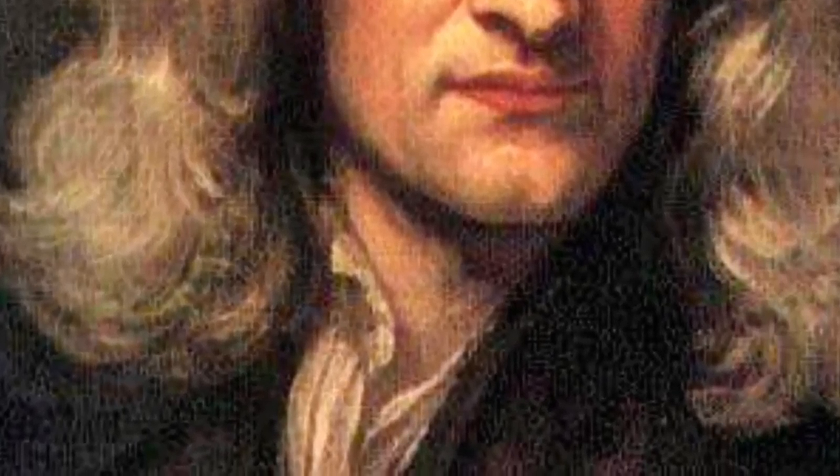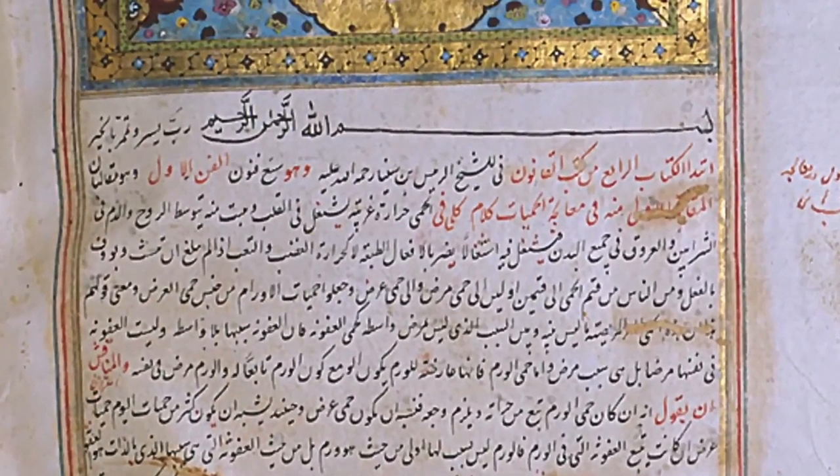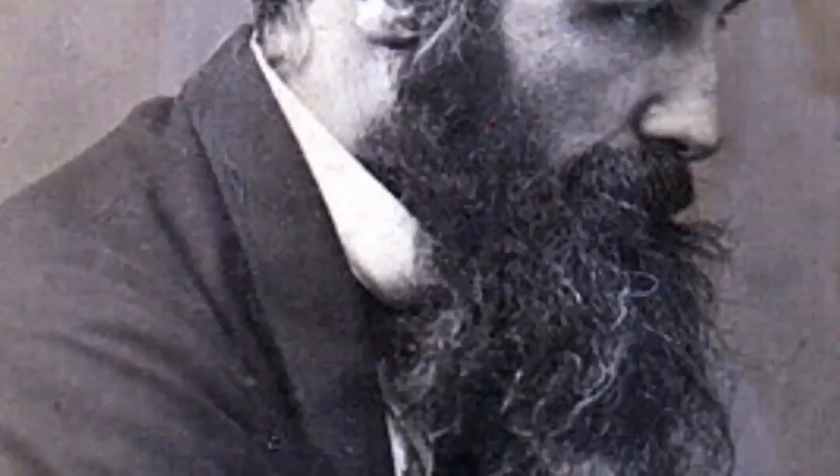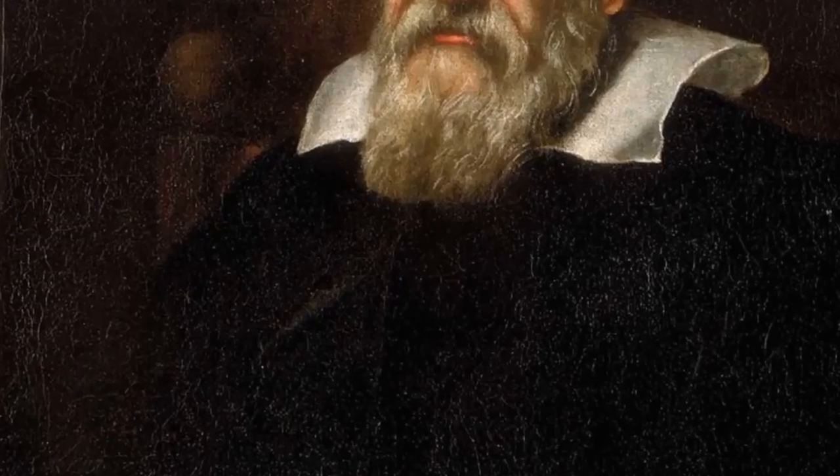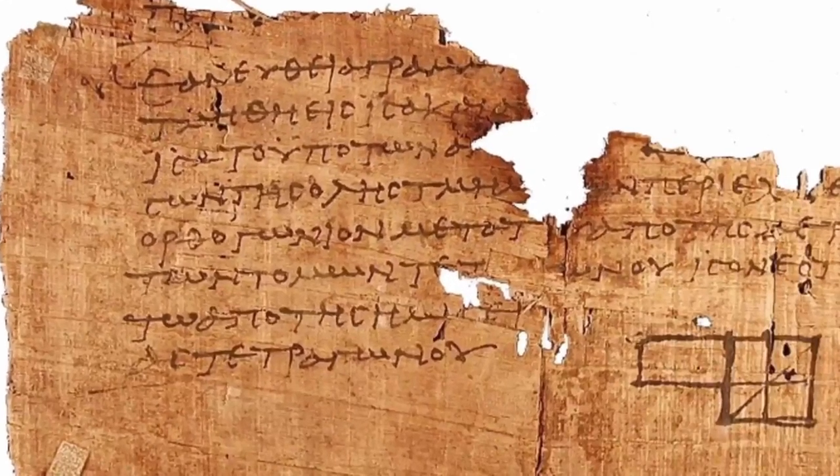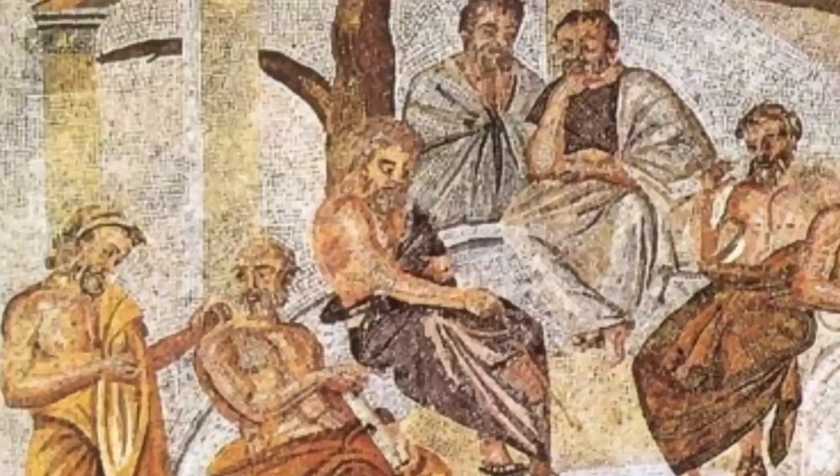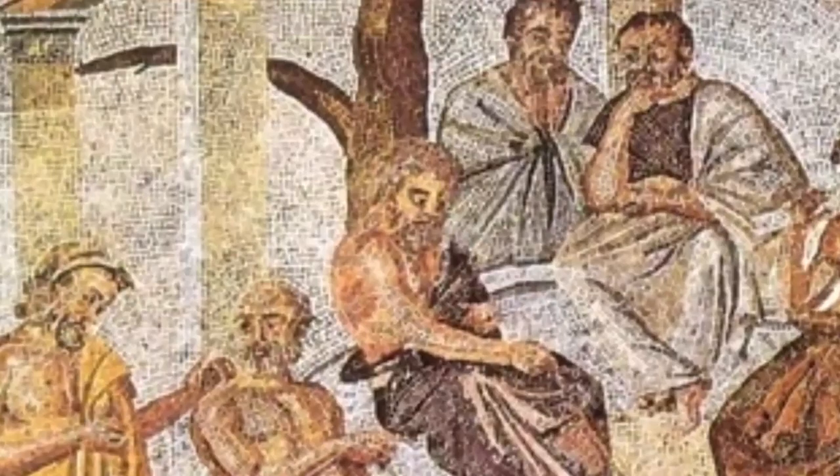Western Europe's knowledge was concentrated in monasteries until the development of medieval universities in the 12th century. The curriculum of monastic schools included the study of the few available ancient texts and of new works on practical subjects like medicine and timekeeping. In the 6th century in the Byzantine Empire, Isidore of Miletus compiled Archimedes' mathematical works in the Archimedes palimpsest, where all Archimedes' mathematical contributions were collected and studied.